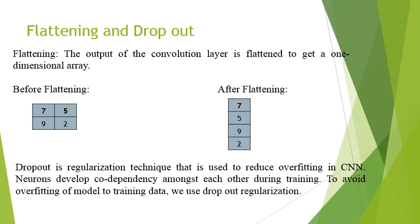Dropout is a regularization technique used to reduce overfitting in convolutional neural networks. When training a CNN, it can get overfitted to the training data and may not be able to generalize to unseen test data. To avoid this, we randomly drop some neurons — that is called dropout.